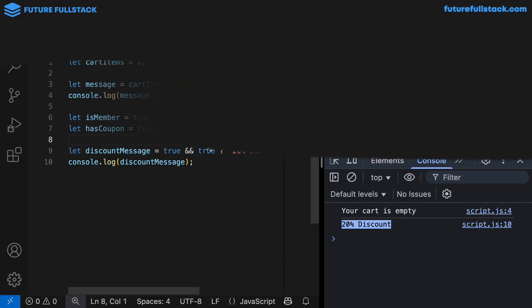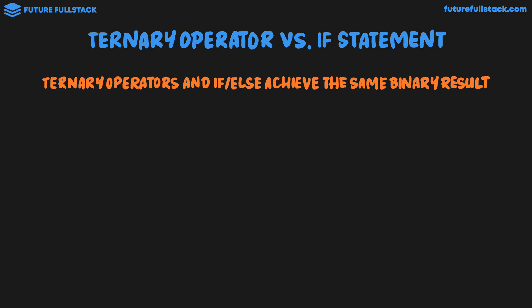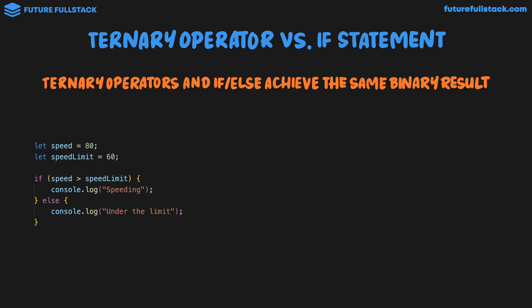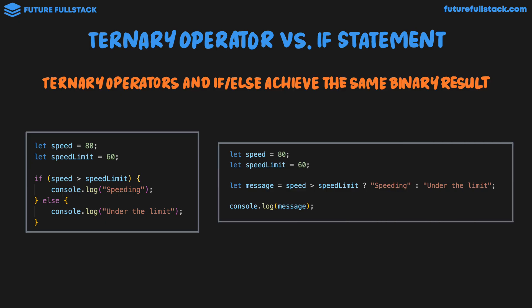Now let's compare the ternary operator and the if statement. Ternary operators and if-else achieve the same binary result. The if-else example checks if speed is greater than speed limit — it's binary because there are two outcomes: speeding or under the limit. This exact same logic can be written with the ternary operator: let message equals the ternary operator where the condition is speed greater than speed limit, followed by question mark, the true outcome 'speeding', colon, and the false outcome 'under the limit', then output that message to the console.